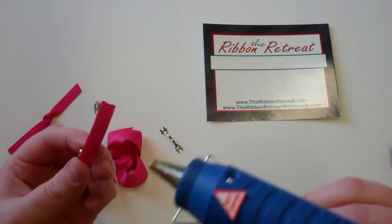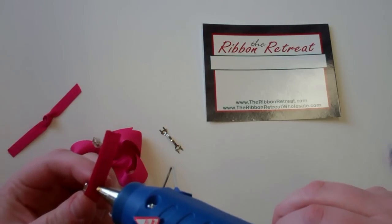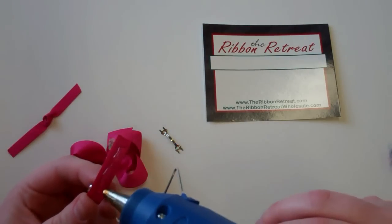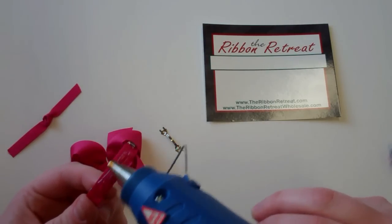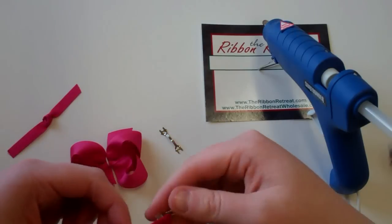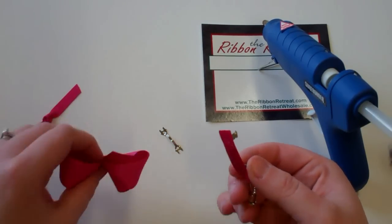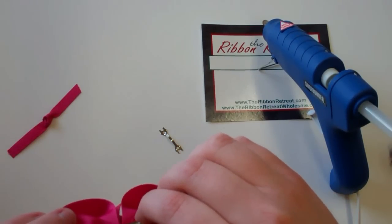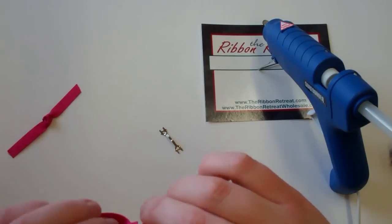So I'm going to do a line of glue on the French barrette. Turn my bow over and attach that to the back.